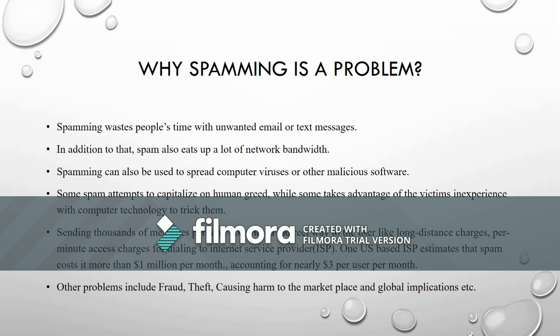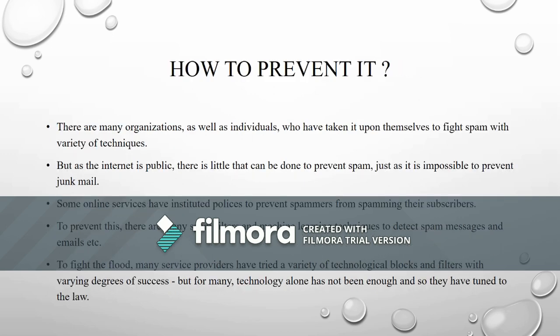Other problems include fraud, theft, and global implications. How to prevent spamming? There are various methods to prevent spamming. Many organizations as well as individuals have taken it upon themselves to fight against spam using a variety of techniques. However, as the internet is public, it is highly impossible to prevent junk mails completely.